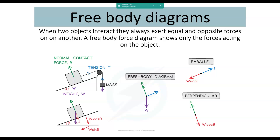We've spoken about free body diagrams before quite a few times. If two objects are interacting, they will always exert equal and opposite forces on each other. A free body force diagram shows only the forces acting on the object, which can be really helpful because situations could be quite complicated. There's a slope, a pulley, a mast, and a block here, but if we draw the free body diagram of that, it actually is much simpler. We've drawn these before — the resultant of the two forces would equal the weight if it was in equilibrium.